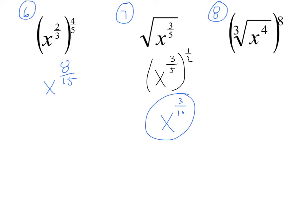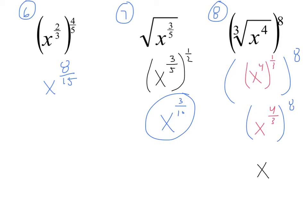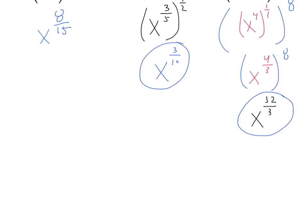For number eight, let's first simplify the inside. This is the same thing as x to the fourth raised to the one-third power, and then the whole thing is being raised to the eighth power. The inside simplifies to x to the four-thirds, and then raising that to the eighth power gives us x to the thirty-two over three. You can leave it in that format, or change it to radical notation: the cube root of x raised to the thirty-second.